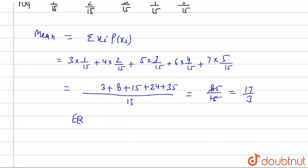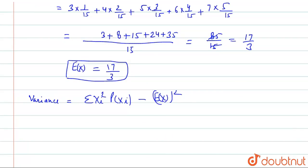Or expectation value of X, this is 17 by 3. Now we will find variance. Variance is equal to Sigma x_i squared times P(x_i) minus E(x) squared.